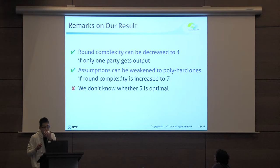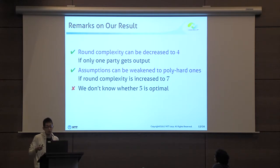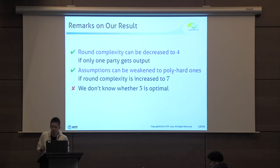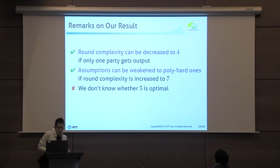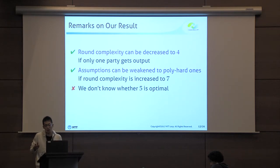There are some remarks about our result. First, our protocol has five rounds in the setting where both parties get output. If we consider the setting where only one party gets output, we can reduce the round complexity further — in particular, our protocol has only four rounds in such a setting. Next, our main result requires a sub-exponentially hard one-way permutation because we need the three-round non-malleable commitment. But if we increase the round complexity to seven, then we can remove that sub-exponential hardness assumption and the protocol can be based on polynomial hardness assumptions. Currently, it is open whether we can obtain five rounds under polynomial-time assumptions.